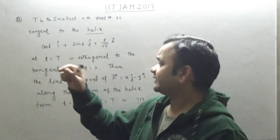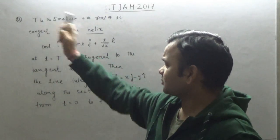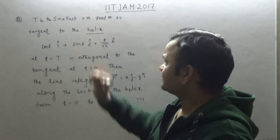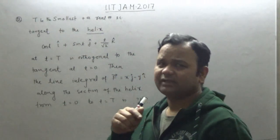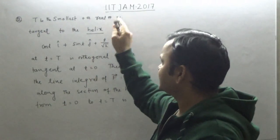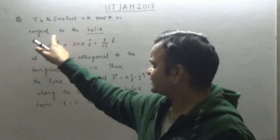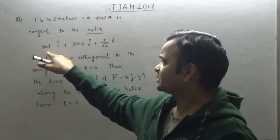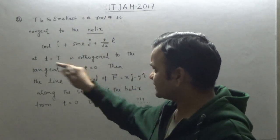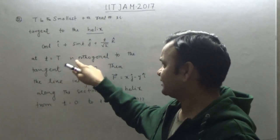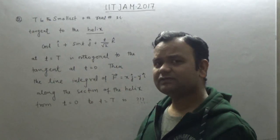The question is: let T be the smallest positive real number such that the tangent to the helix — the curve r(t) = cos(t) i + sin(t) j + (t/√2) k — at t equal to capital T is orthogonal to the tangent at t equal to zero.